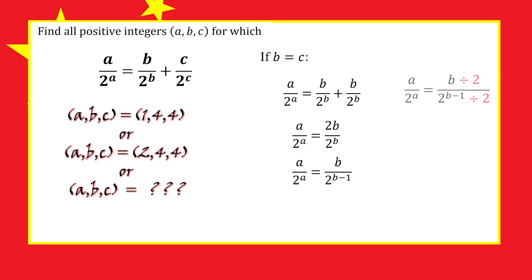On the top, we get b over 2, or a half b. On the bottom, when we divide by 2, we get 2 to the power of b minus 1 minus 1, which is 2 to the power of b minus 2.